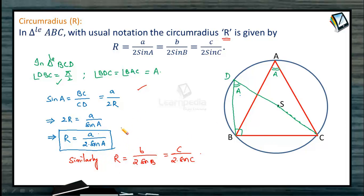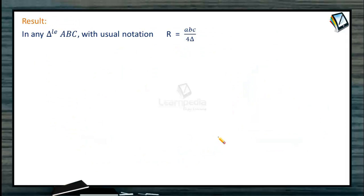A similar derivation follows for the other results, which we have also seen at the time of the sine rule. So the circumradius formula is R = a / 2sinA = b / 2sinB = c / 2sinC. Now in any triangle ABC with usual notation, the circumradius R is also given by R = abc / 4Δ. This alternate relation gives the circumradius when all three sides are known — we simply calculate Δ using Heron's formula: Δ = √(s(s−a)(s−b)(s−c)).